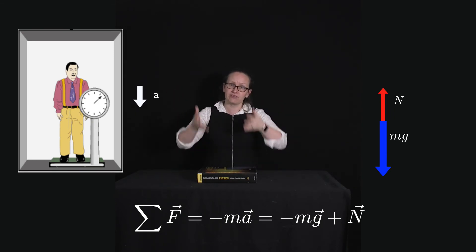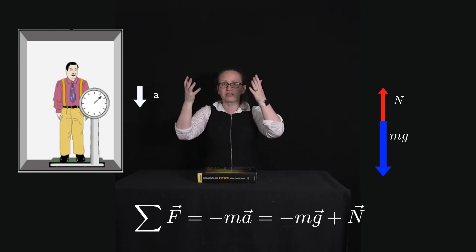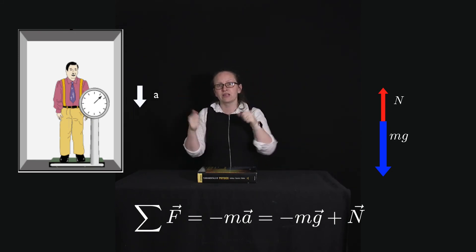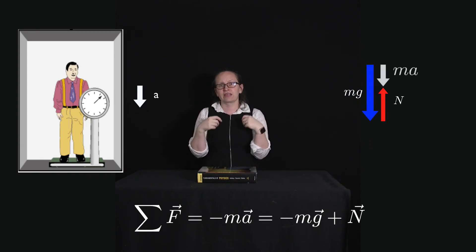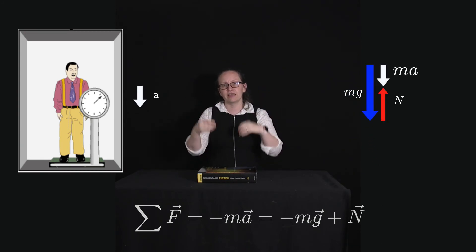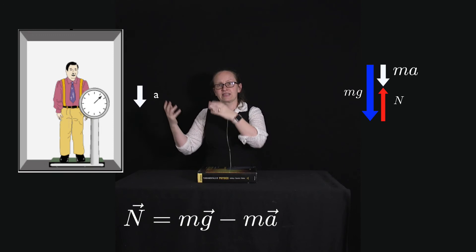So N is positive in this case as it's an upwards force. It's pushing the person in the lift up. So rearranging this we can see that the normal force is equal to mg minus ma.